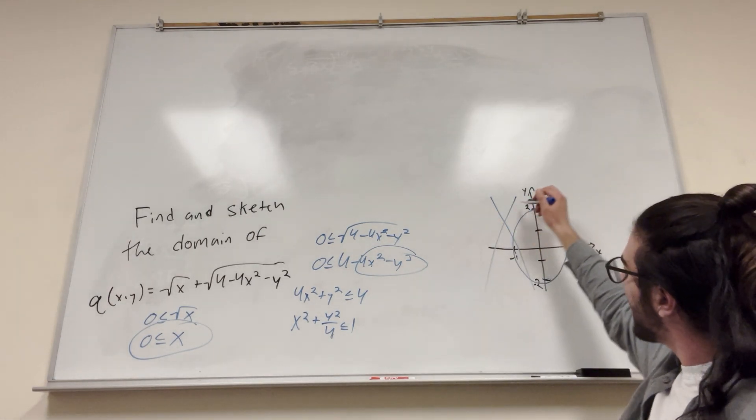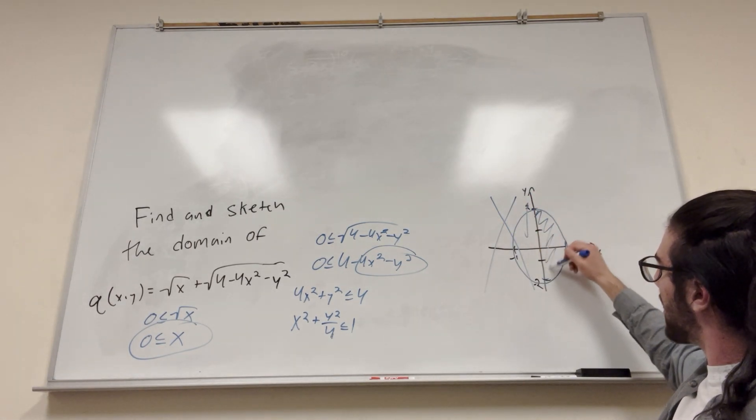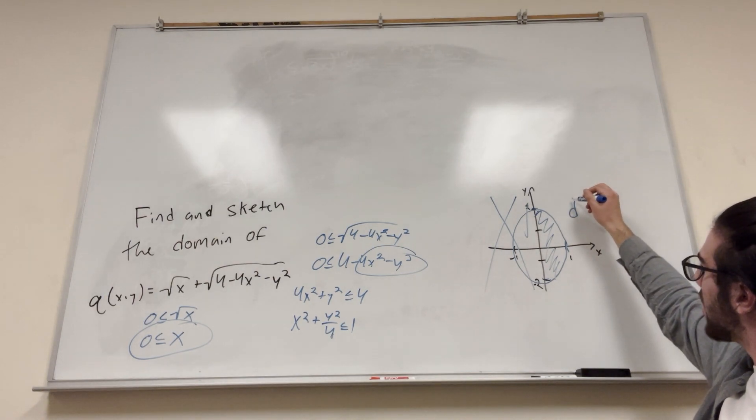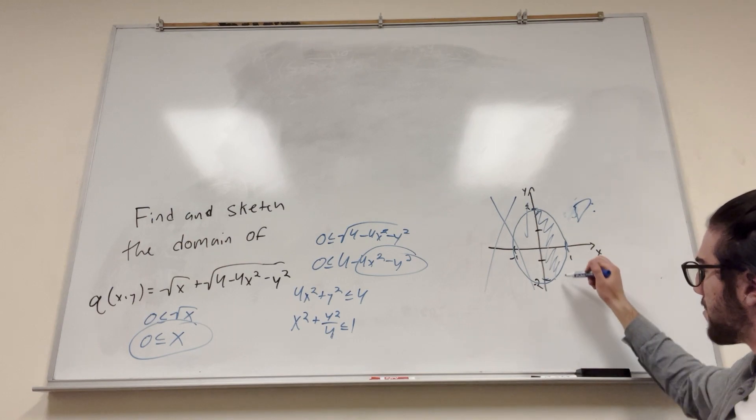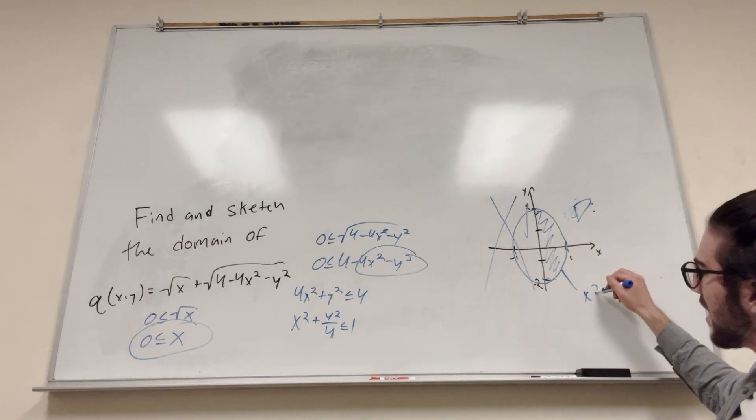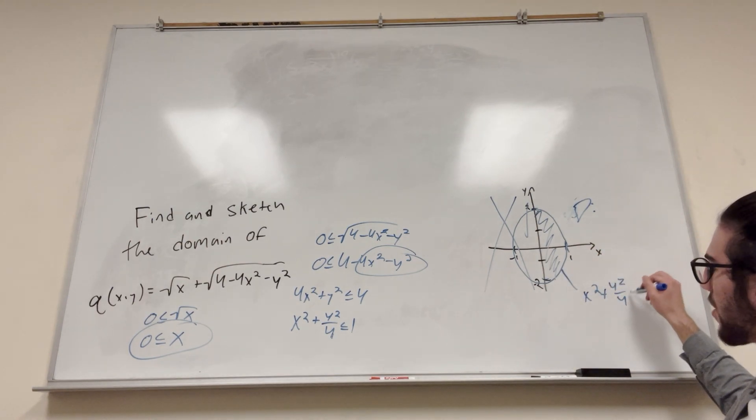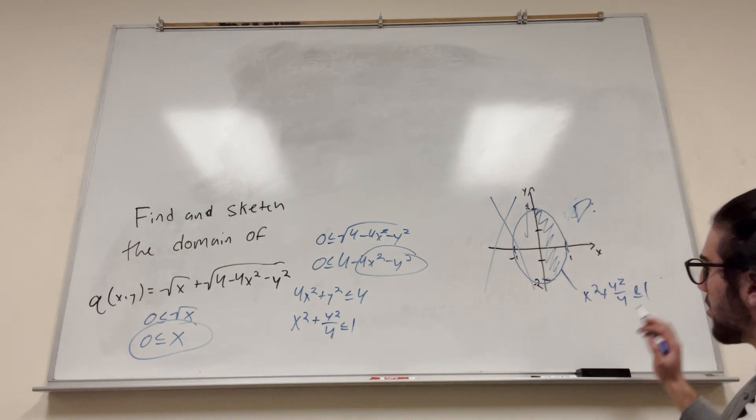But because we cannot be at this side, it has to be this area here. This is our domain. Actually, I don't know why I made it lowercase. Capitalize. That's our domain right there. And if you want to really specify this line, it's going to be x squared plus y squared over 4 is less than or equal to 1. That's what that domain is.